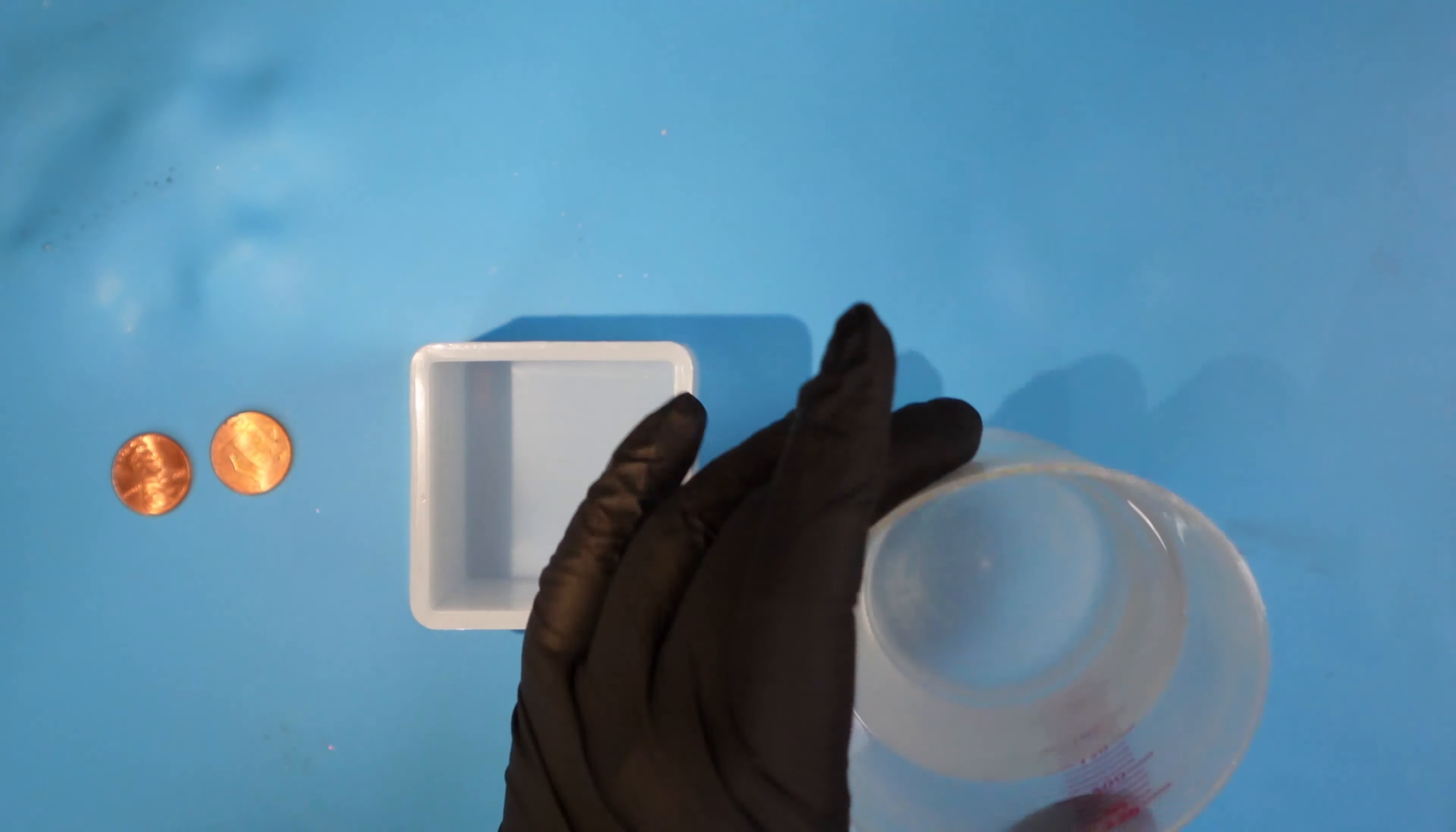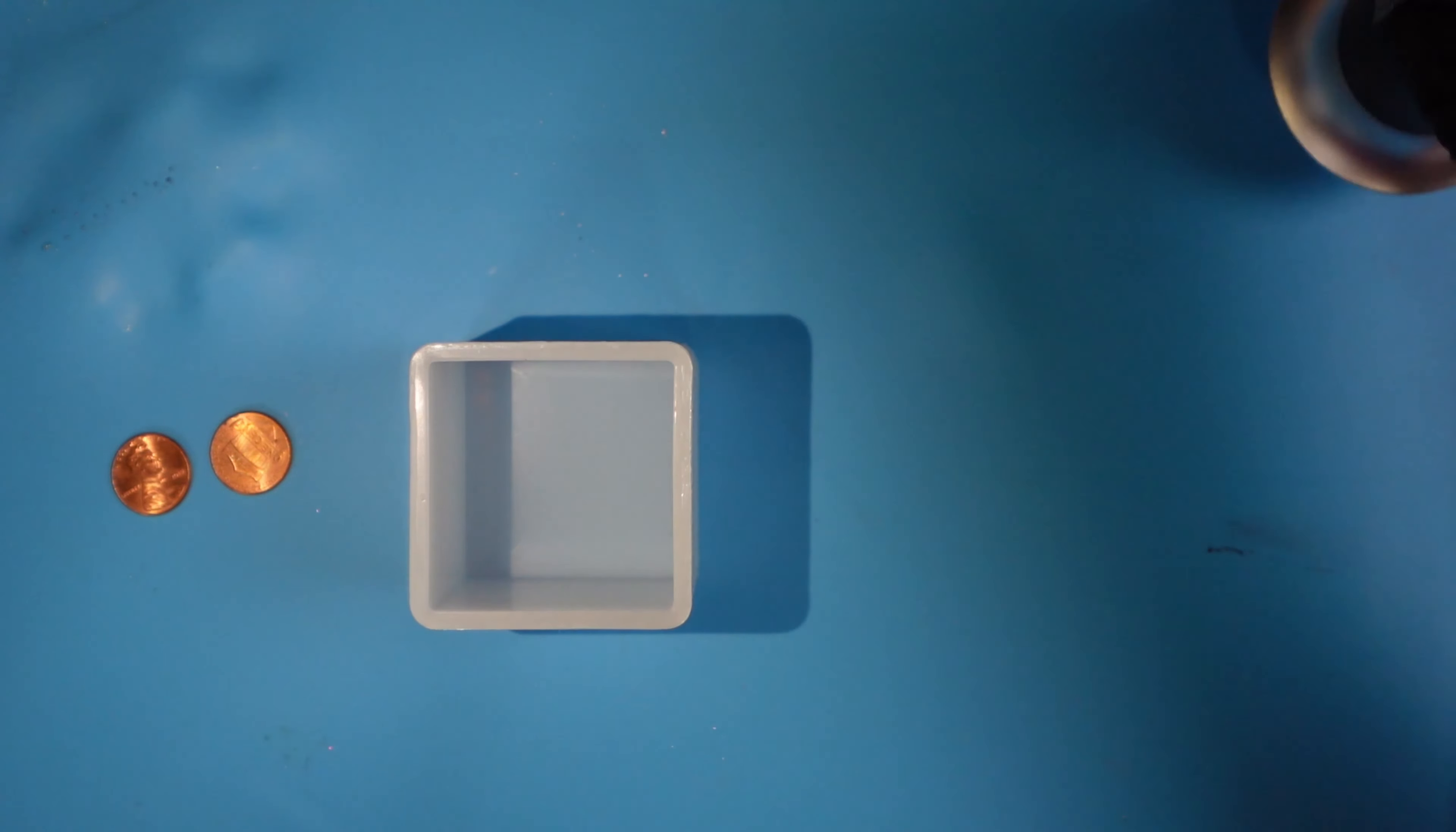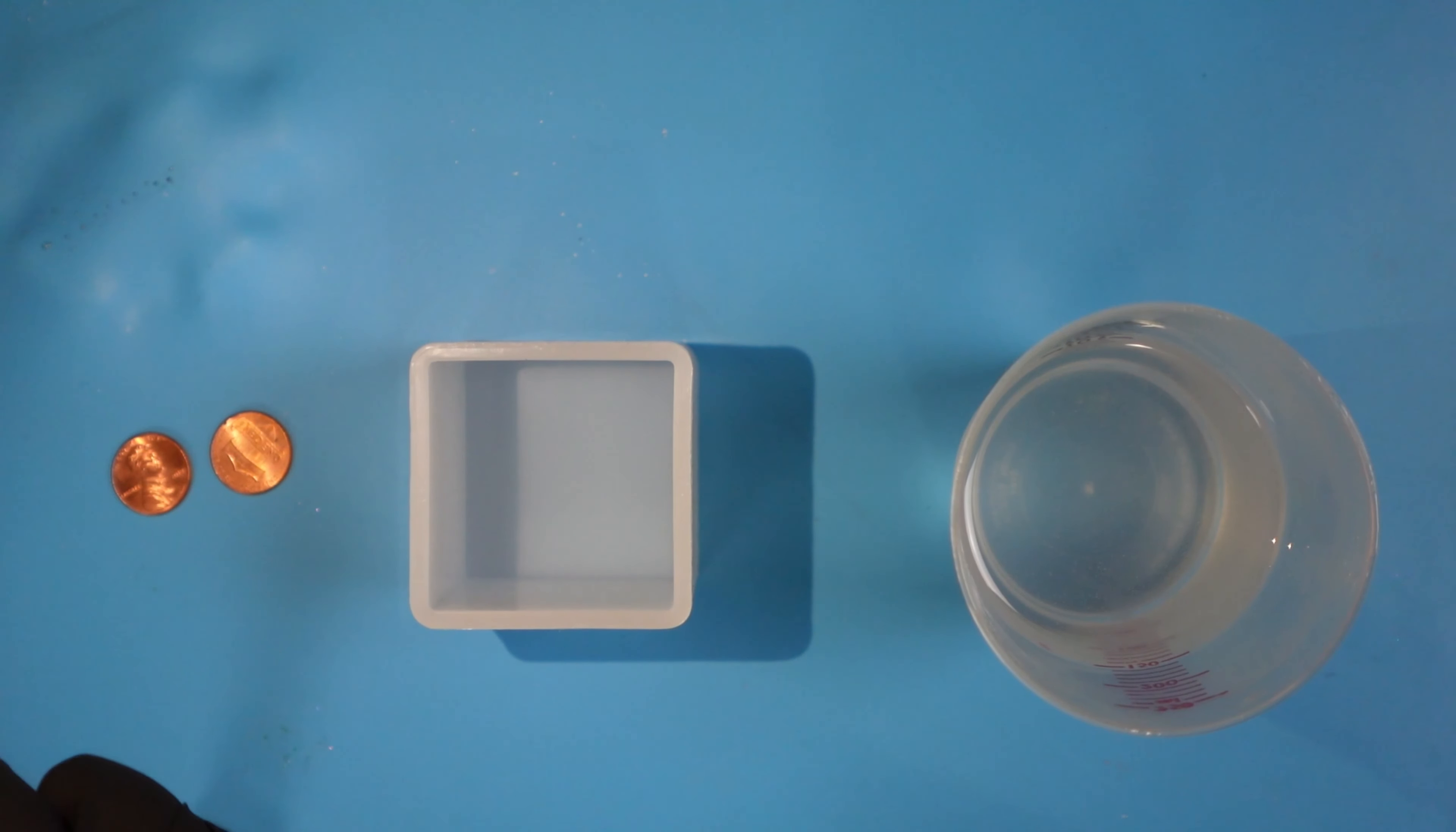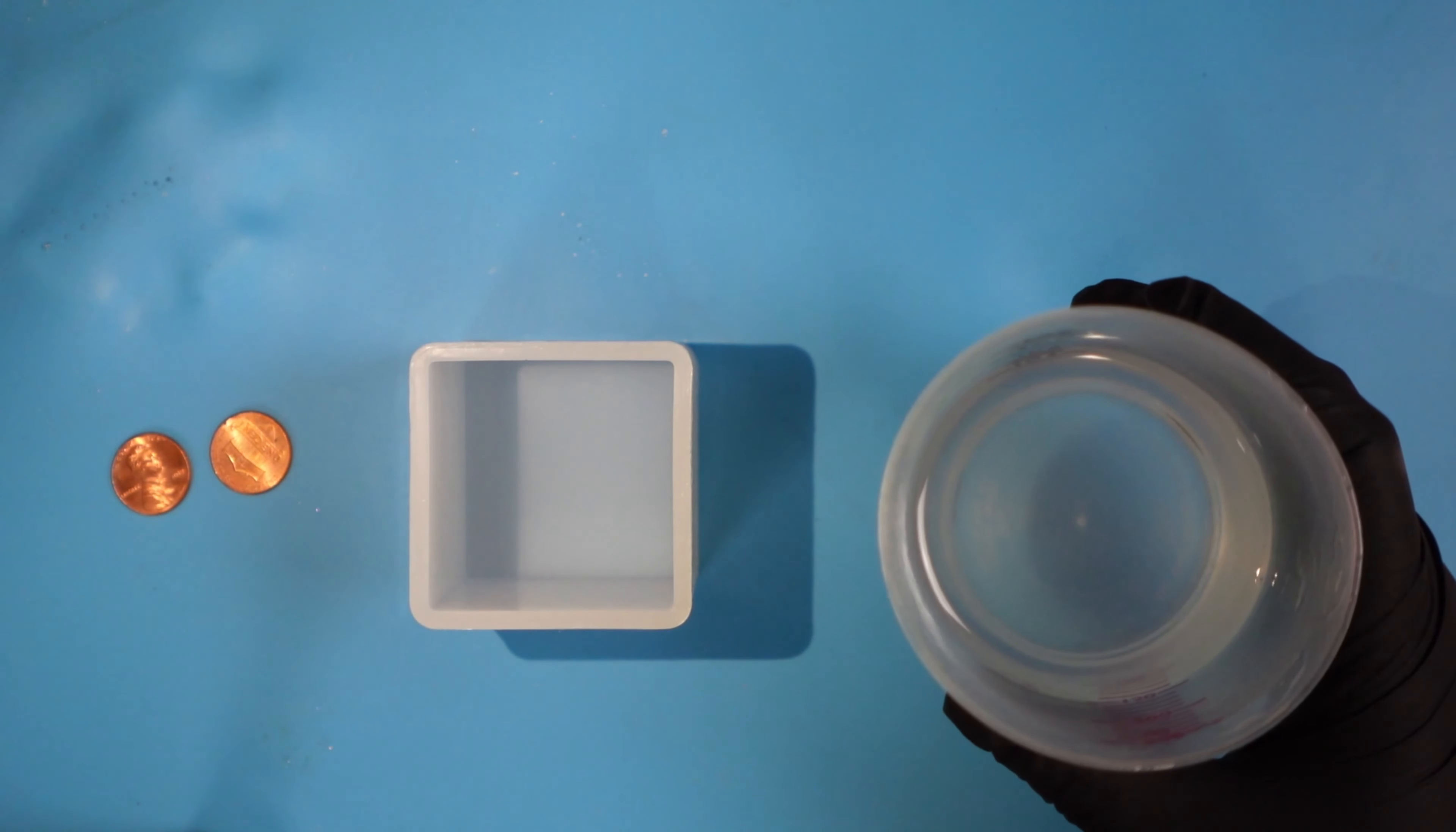So what we're gonna do today is just pour the first layer. Simple enough right? We shall see. And then after we pour that first layer I will bring you back three days later after it's cured to place the pennies and do the next layer. So why don't we go ahead and get to pouring. I already pre-mixed my resin so that you guys didn't have to watch me do that. It does take five minutes to do. So it's just simply a clear resin and we're not gonna put any color in it and it's a two-to-one ratio.